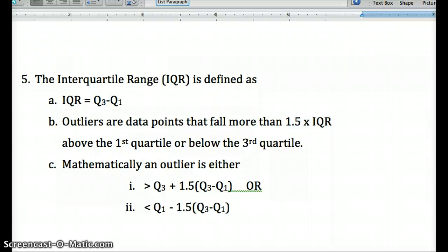Outliers will be strictly defined as points that fall more than one and a half times this value, meaning we subtract Q1 from Q3, above or below the third quartile.